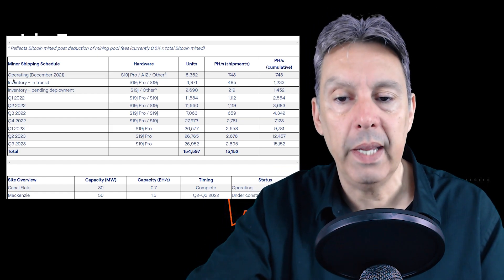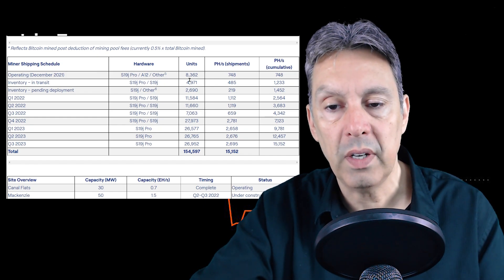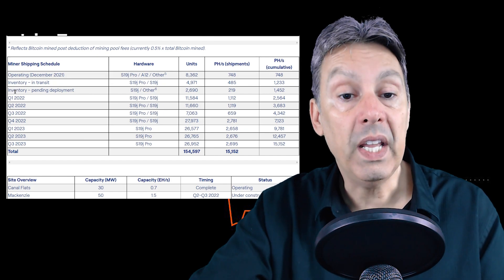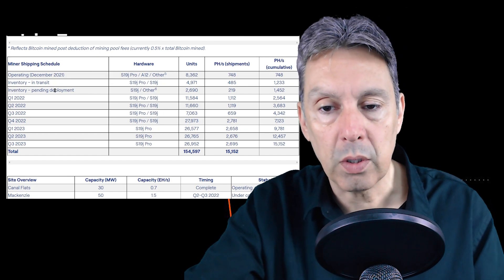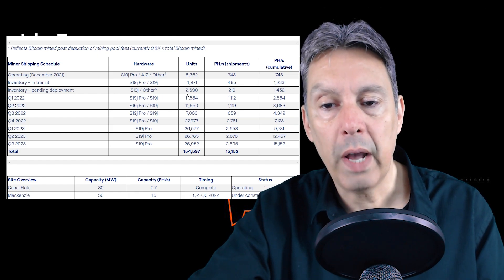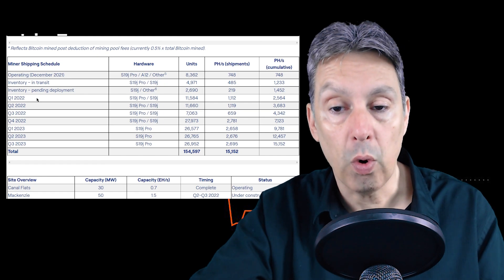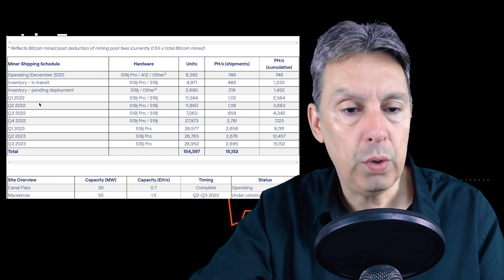They have some that are in transit already. It looks like 4,971 machines. They have some already in inventory pending deployment, so I assume those are probably going to be deployed in January, and that's 2,690 machines.